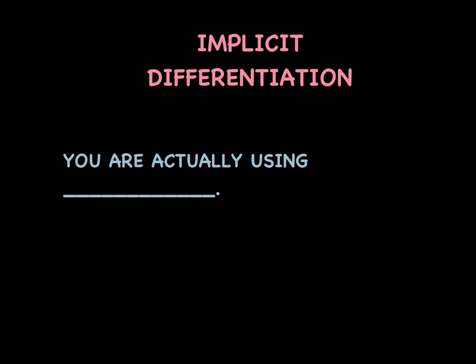Tonight we're going to tackle implicit differentiation. You've been exposed to it before, so tonight I'm going to challenge you to go deeper and get a lot stronger with your conceptual understanding of this rule. Throughout the entire night, I want to continue to emphasize the fact that all we're doing is using the chain rule — that's really all we're doing repeatedly. We just need to understand what it means to take the derivative with respect to x versus with respect to t versus with respect to any other independent variable.